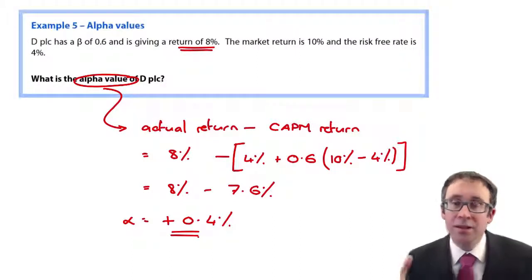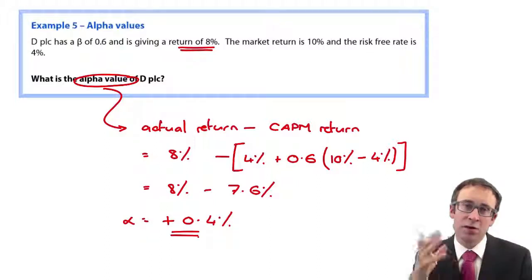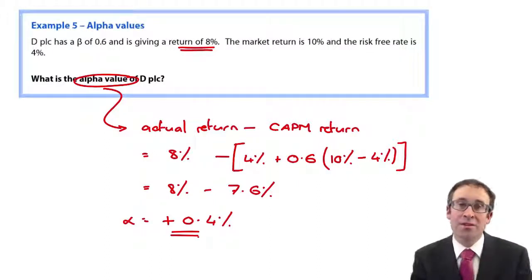That's it. There's nothing else to it in terms of alpha value. So if you get a question on alpha values in the exam, thumbs up, you should be able to do it reasonably straightforwardly.